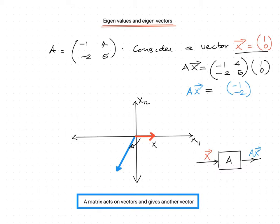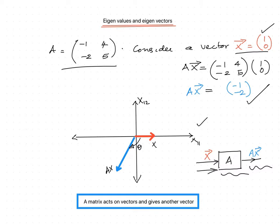Let us consider a matrix A to which a vector x is applied. It results in a vector Ax. If we consider the matrix A as [[-1, 4], [-2, 5]], and this matrix acts on the vector x = [1, 0], then the resultant Ax is [-1, -2]. Here we can see that x is a vector and Ax is the resultant vector. The vector x has changed its direction through some angle theta.